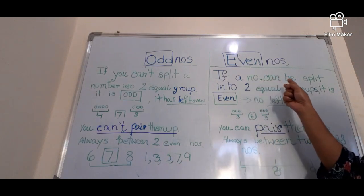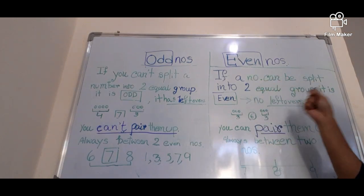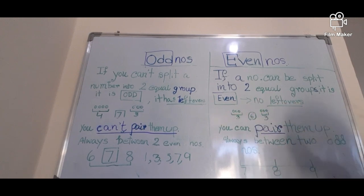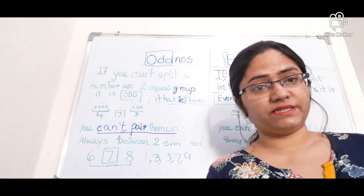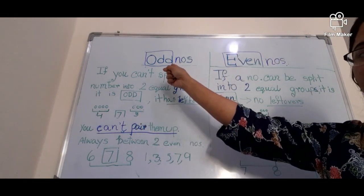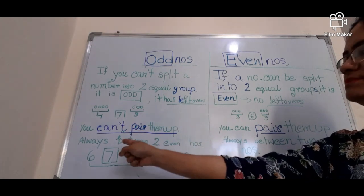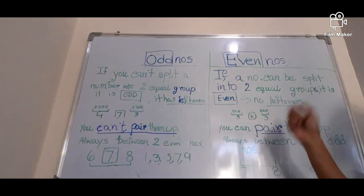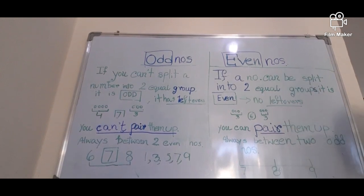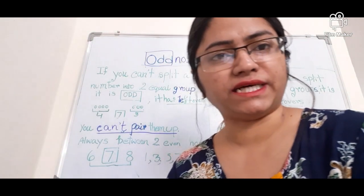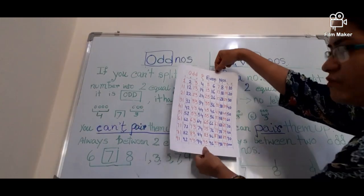That means six is an even number. The definition of even number: if a number can be split into two equal groups, it is called an even number, and in that case there are no leftovers. In the case of odd numbers, we can't pair them up evenly, and the odd number's position is always in between two even numbers.